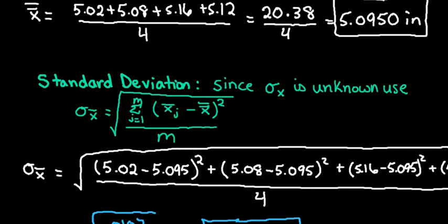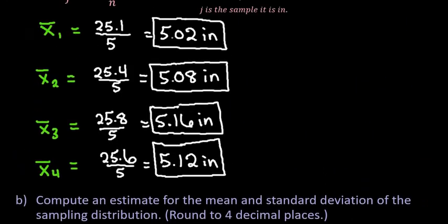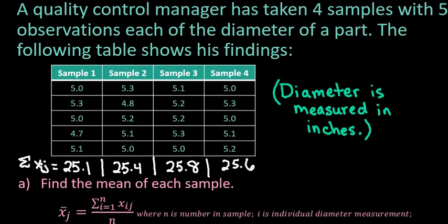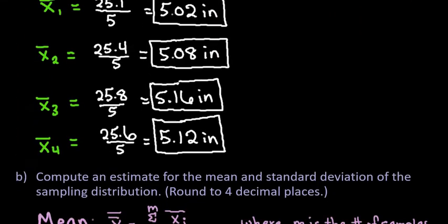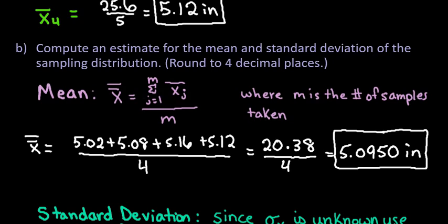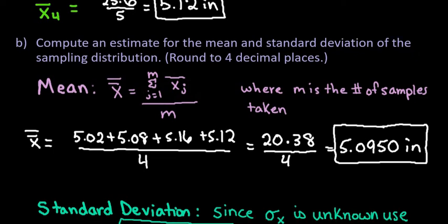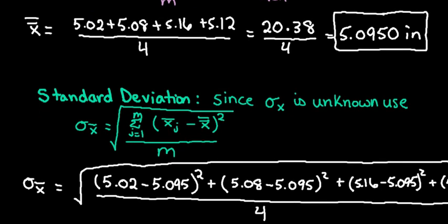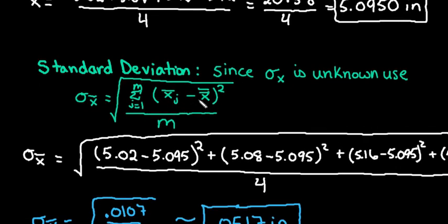To recap: to find the mean and standard deviation of the sample means, start by collecting your samples, find the mean of each individual sample, then find the mean of all the sample means — that's your estimate for the mean of the sampling distribution. The standard deviation is found by taking each individual sample mean, subtracting the overall mean of all sample means, squaring it, dividing by the number of samples, and taking the square root. Thanks for watching — if you have any questions or additional topics you'd like covered, please let me know.